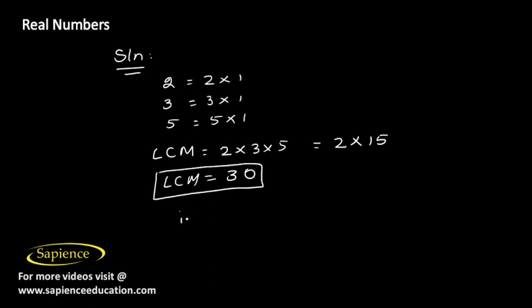So for the first part of the question, the answer will be LCM plus 1, which is equal to 30 plus 1, which is 31.